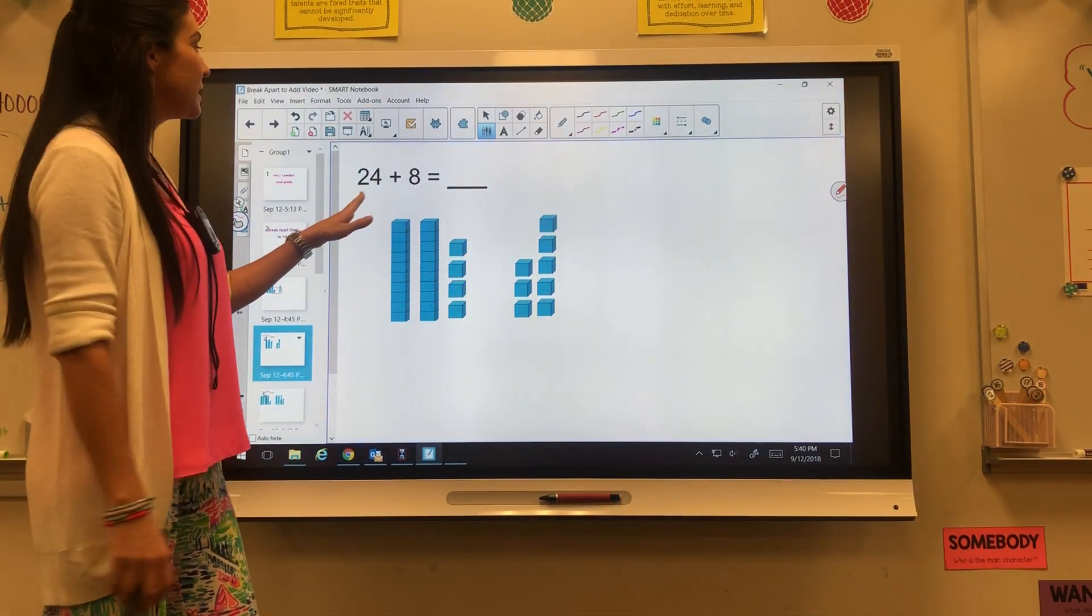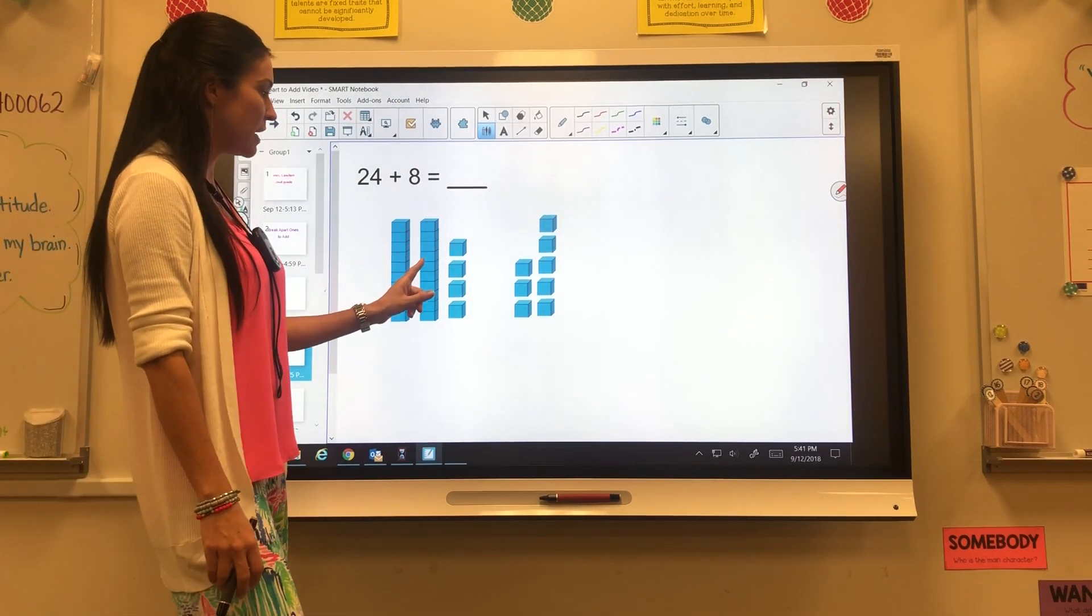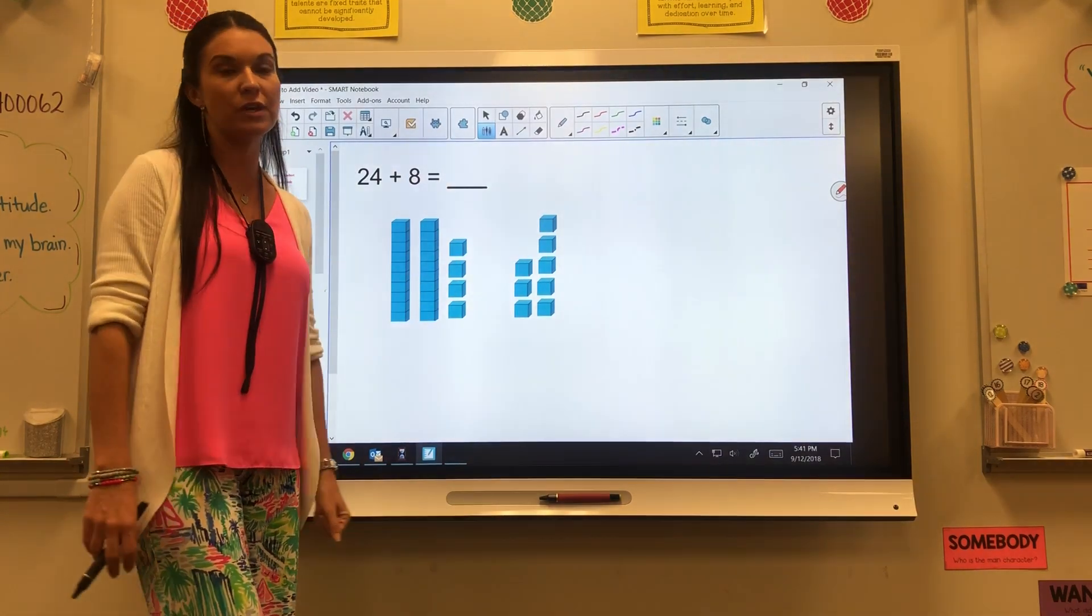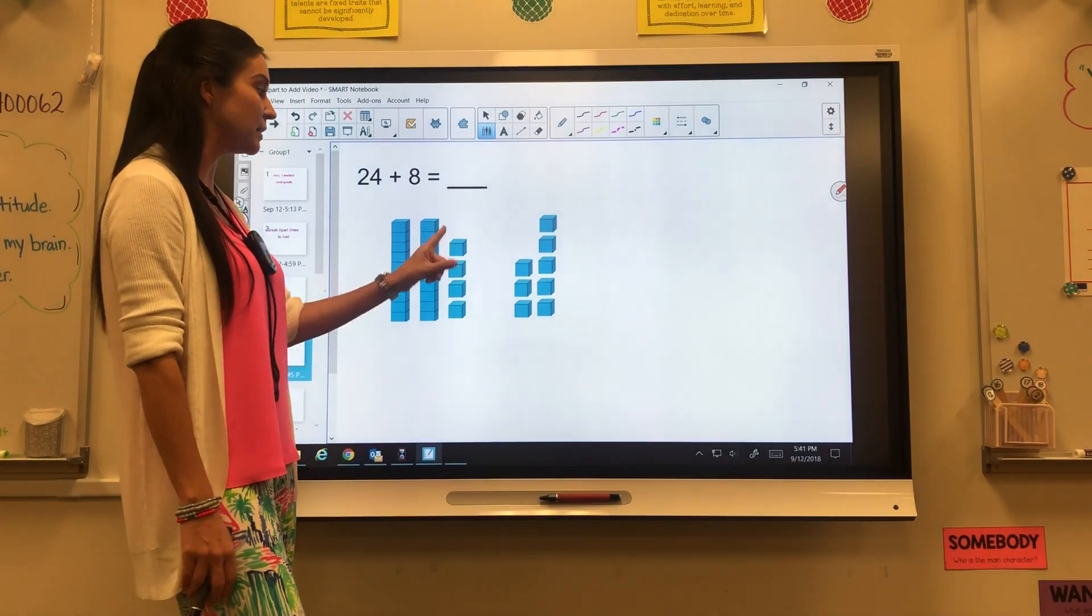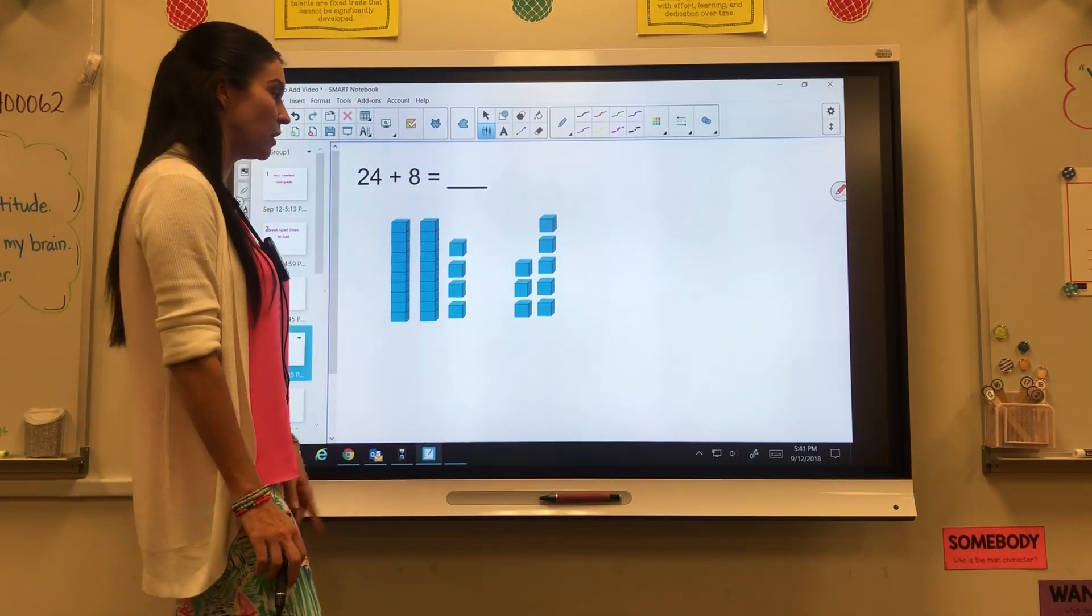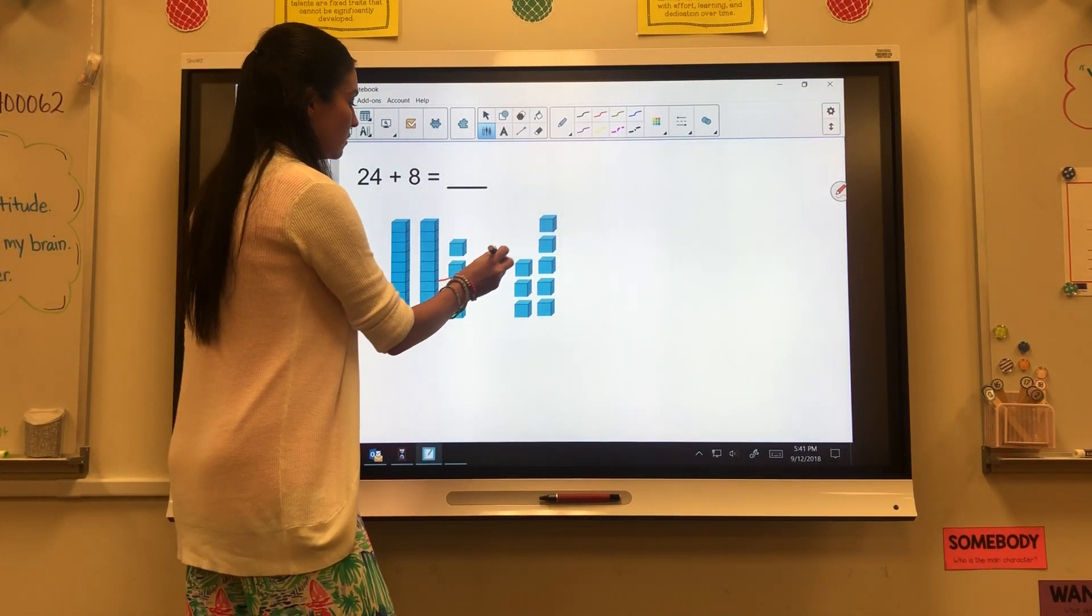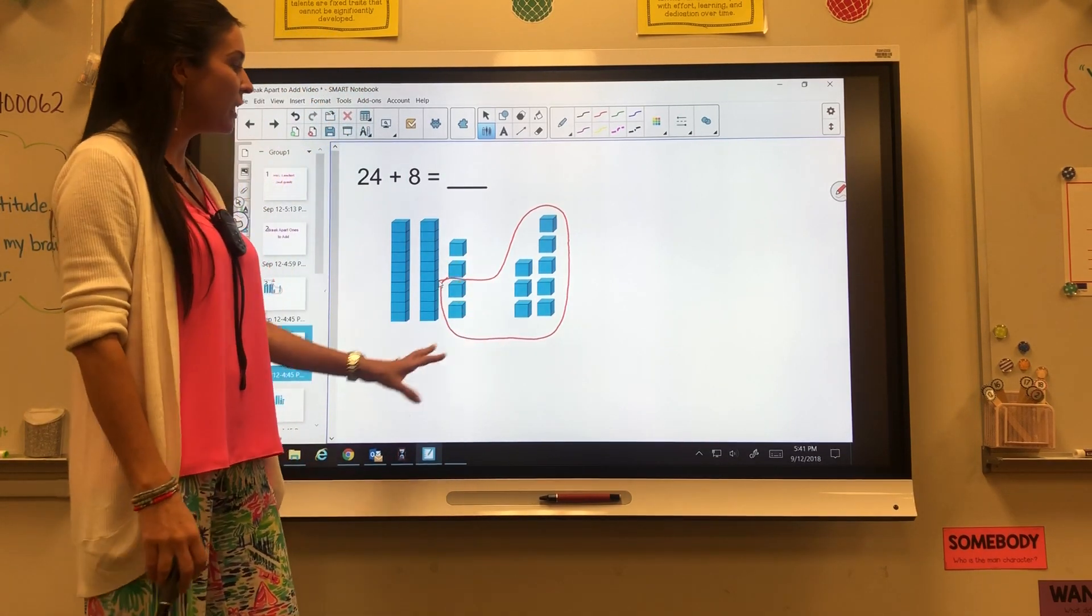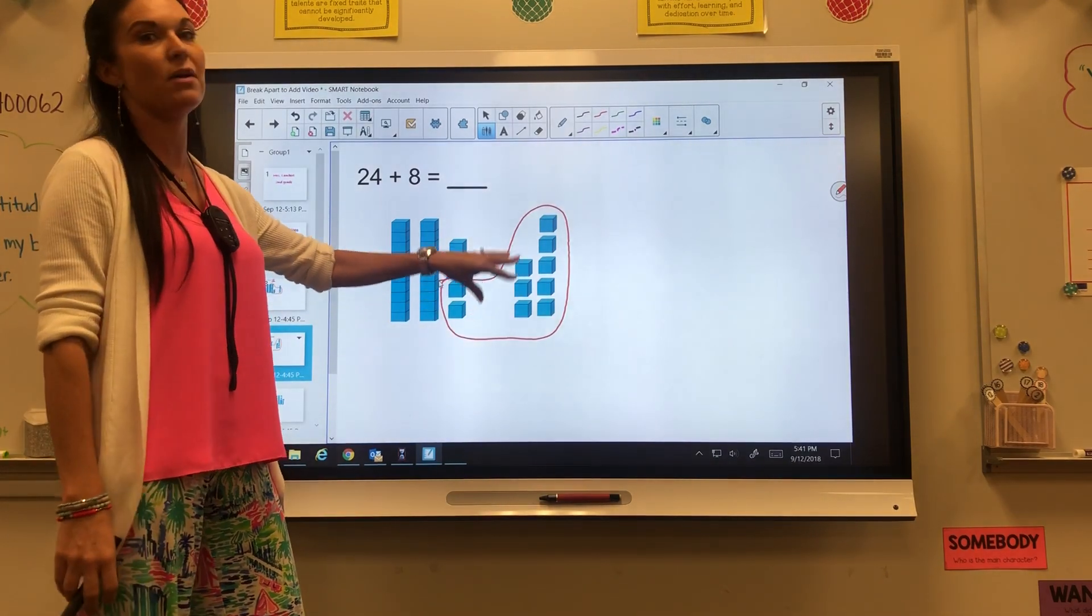Another example: 24 plus 8. Again, I have two tens for 20. I have four ones for my four, and then I have eight ones over here. I'm going to do the same thing, even though it's on the other side this time. I'm going to still take from the side that has the least and I'm going to move it to the side that has the most over here. So if I have eight ones, I need two more. It doesn't have to look pretty. It doesn't matter how you do it.